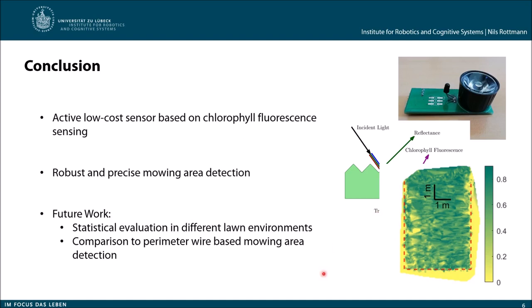However, we need to statistically evaluate our sensor in different lawn environments—for example, on really good grass, bad grass, and so on. We would also like to compare it to the state-of-the-art approach with the perimeter wire, to compare how efficiently a lawnmower can mow the lawn with the perimeter wire and how efficiently it can mow with our new sensor.